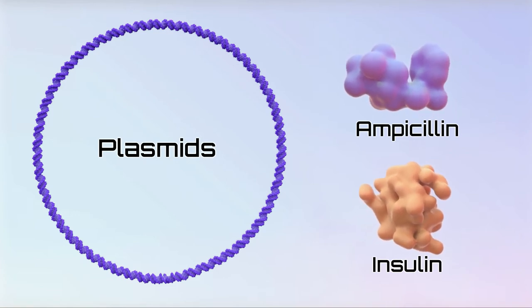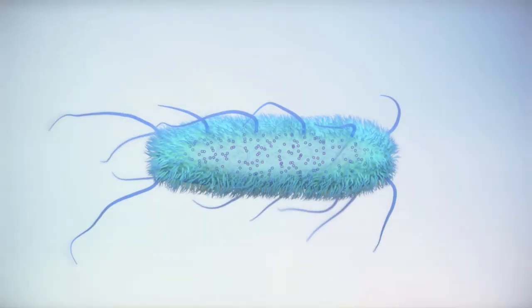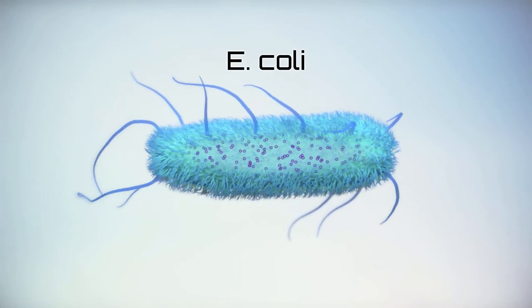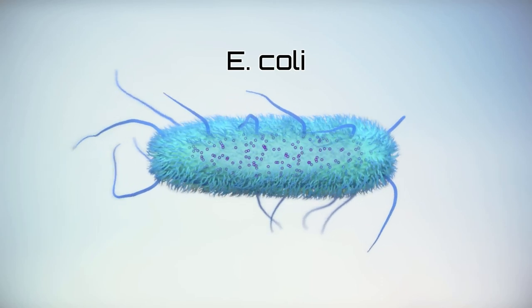This protein lets the bacteria live in the presence of a particular antibiotic, in this case, ampicillin. During the transformation process, we selected only the E. coli that had taken up the plasmid, made the antibiotic resistance protein, and will be able to survive in the media after the ampicillin is added.